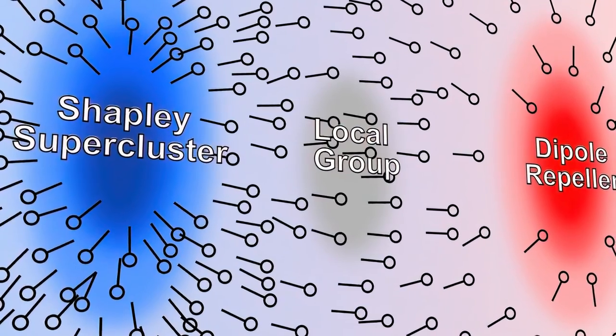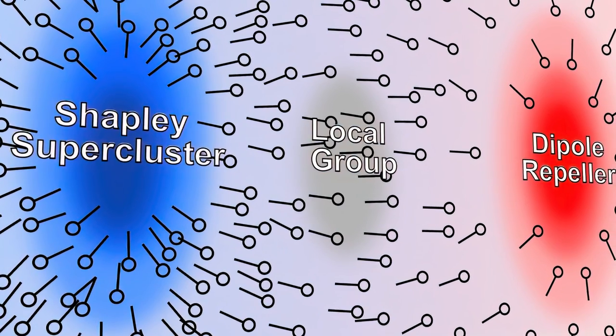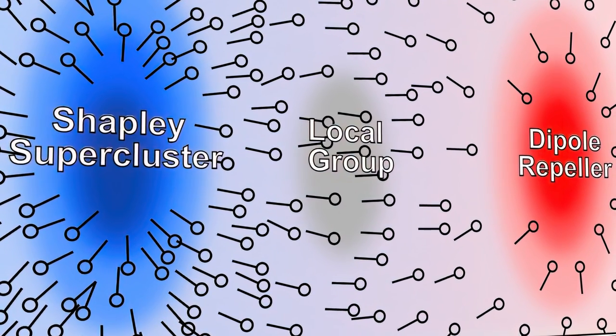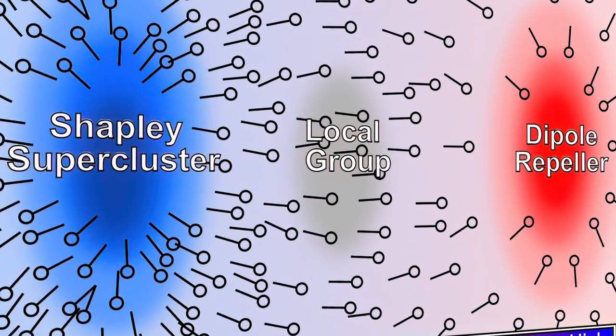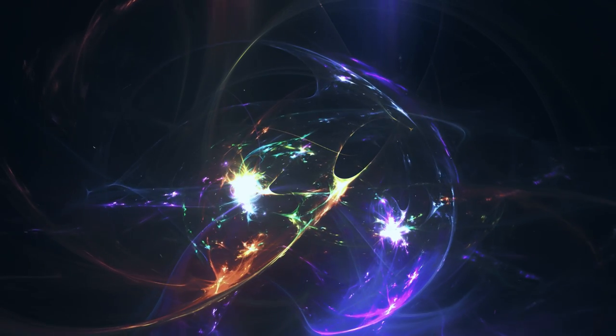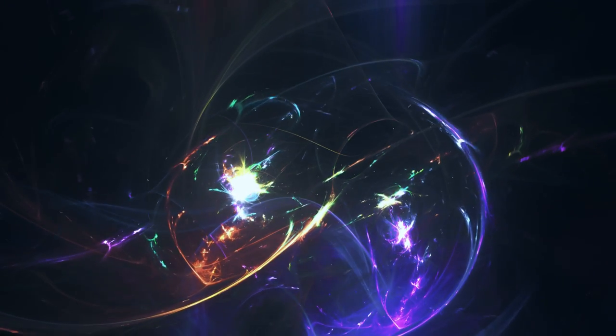As a result, the dipole repeller is likely devoid of matter. And because underdense regions of space push matter away as much as overdense regions attract, the dipole repeller is associated with the flow we observe too.